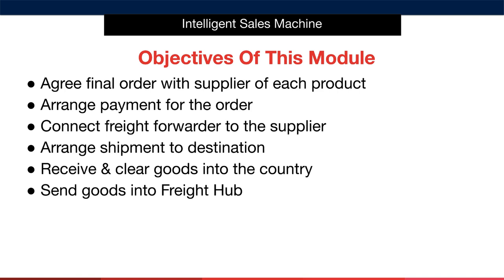Next, you'll arrange shipment to the destination country with your freight forwarder. This will initiate the shipping of your items. Once they're loaded onto a container and then onto a container ship, they'll eventually be received and cleared into the destination country. I'll go through this process in detail, as well as how to acquire what I call HS or harmonized codes. Finally, we'll send the goods into the pre-Amazon location freight hub and then into one or more of Amazon's fulfillment centers. I'll go through the hub to Amazon process in the next module.